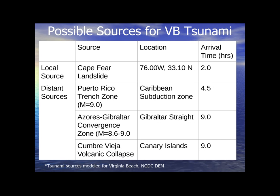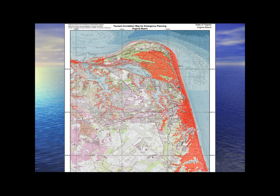Virginia Beach does have a tsunami warning system out of the Wakefield meteorology office. The danger zone runs about three to four miles inland — except up near First Landing State Park where many people live. You'd want to go further inland, past Oceana. Areas like Pembroke Mall or Lynn Haven Mall would probably be outside the danger zone, so there are places we could go, and we'd have plenty of time to get away.